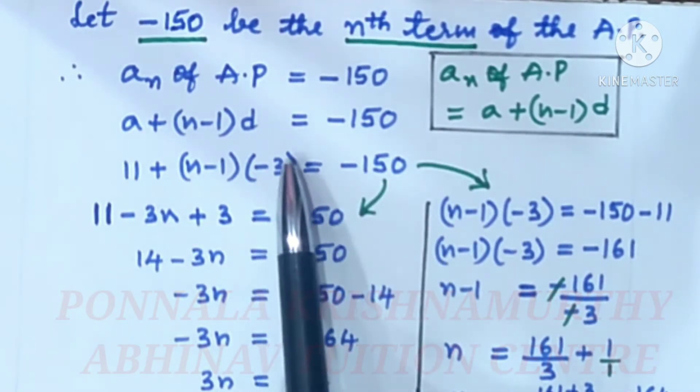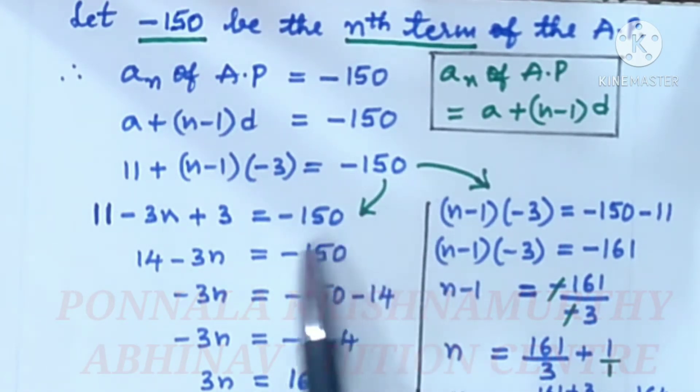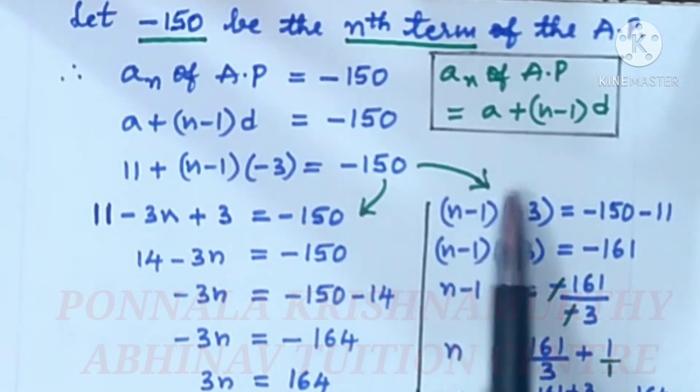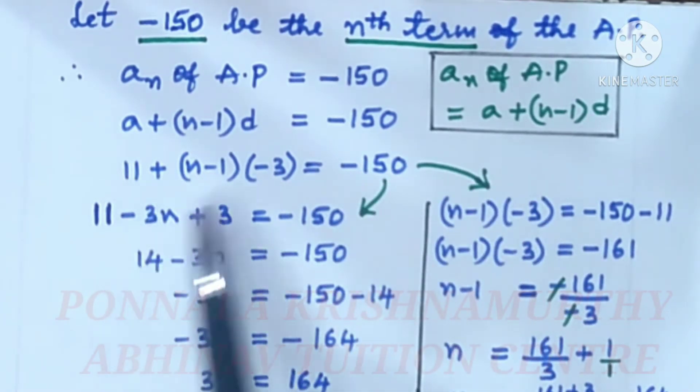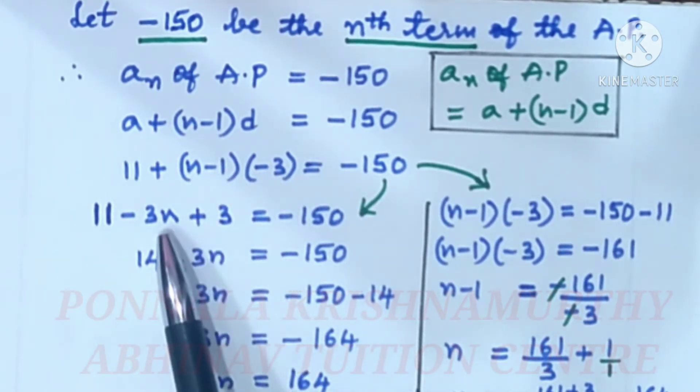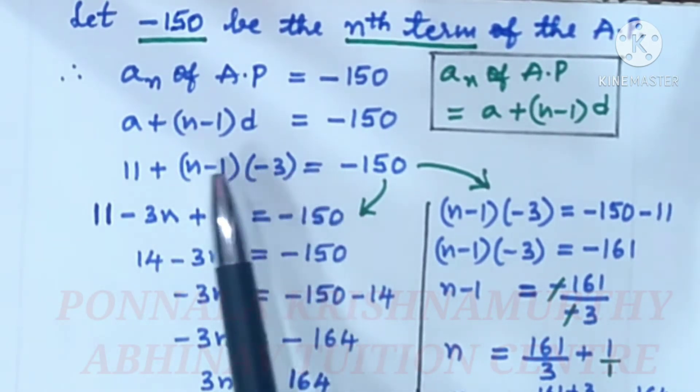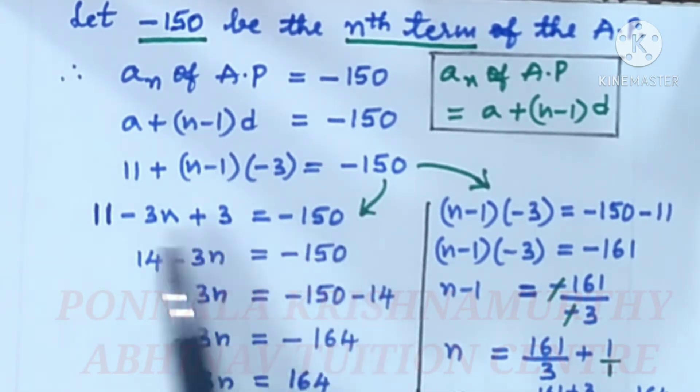This bracket is compulsory, don't forget. Now, we can do in 2 methods. First, we will see this one: 11 minus 3n plus 3 is equal to minus 150. Now, 11 plus 3 is 14 minus 3n is equal to minus 150.